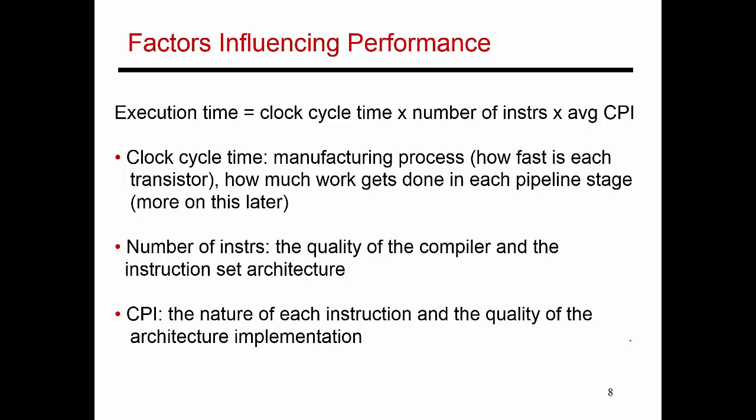The second factor is the number of instructions, and the number of instructions is a function of the quality of the compiler. So if I write a program in C, how good is my compiler at converting this into the least number of instructions possible? It's also a function of how I design my processor and my instruction set architecture, that is what kinds of instructions does this processor support? Accordingly, the compiler then uses those instructions to convert the program from source code into assembly level instructions.